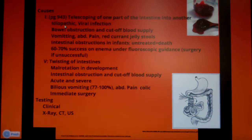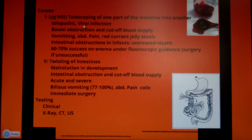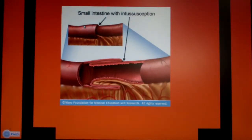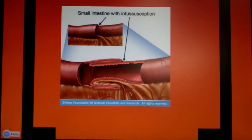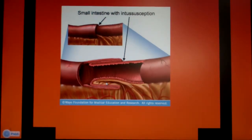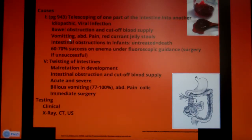As for the cause, it's usually idiopathic — we really don't know what causes it, though a viral infection is suspected. The problem with intussusception is it cuts off the blood supply to the bowel and starts literally killing parts of the bowel. In the picture, the small intestine is telescoping — one part folding into another. You can see the vascular tissue being cut off, which explains the abdominal pain and red currant jelly stools from significant blood loss.